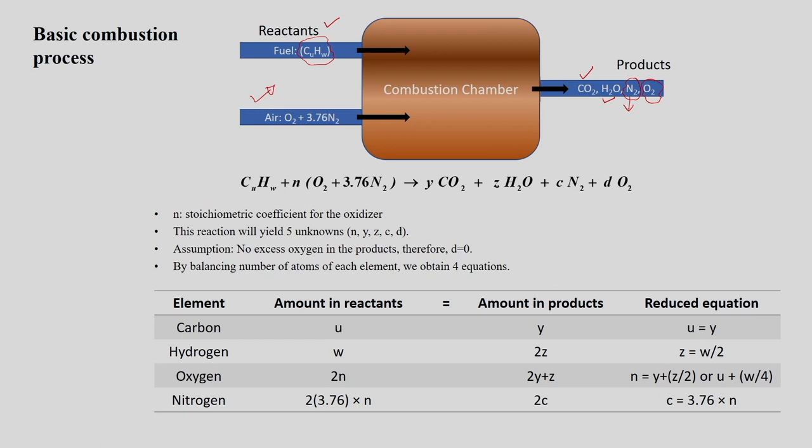When the fuel undergoes complete combustion, it completely oxidizes the fuel to produce CO2 and H2O as products. This is referred to as the stoichiometrically balanced equation for the completely combusted fuel.